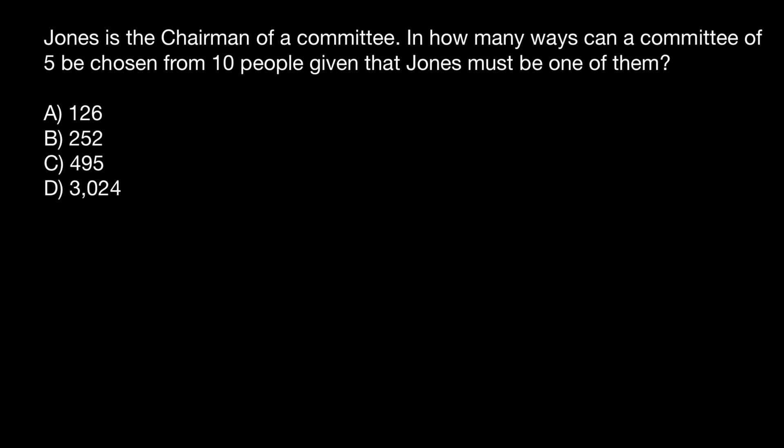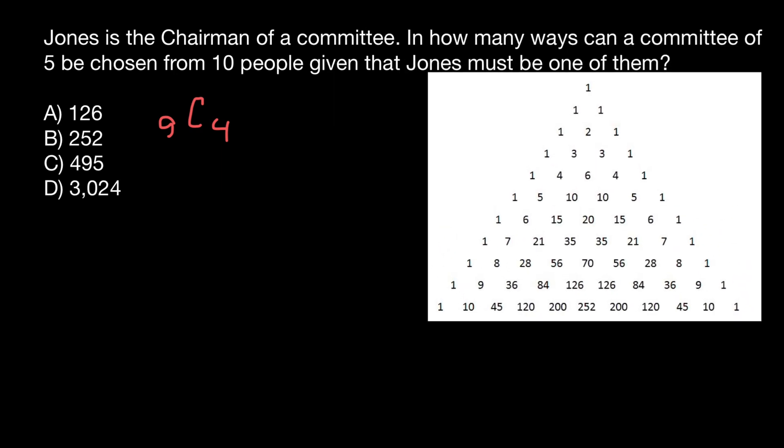The notation is going to be: out of nine people, we are looking for combinations of four. There are two ways to solve this problem. One would be to use Pascal's triangle, and here's Pascal's triangle.